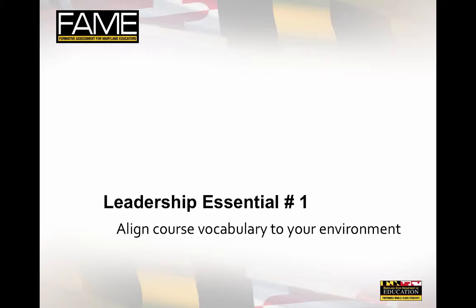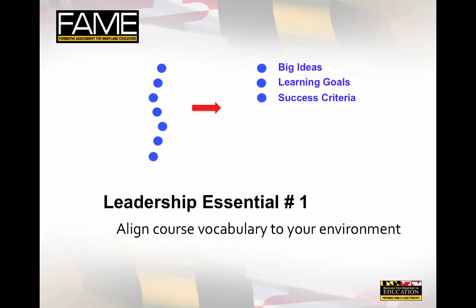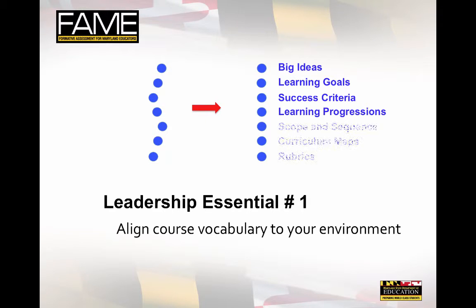Leadership essential number one: align Module 2 vocabulary with school vocabulary. Leaders can help by identifying how the key terms in Module 2 are similar to or different from current terms in use in your school. The terms Big Ideas and Learning Goals have very specific FAME definitions, and we have seen that these are defined in many different ways in the field. Leaders can encourage dialogue about how each of these terms is currently being used and clarify issues that arise. Vocabulary alignment will also help clarify the differences between learning progressions and other types of planning tools, such as scope and sequence documents, curriculum maps, and rubrics. Confusion about these terms is typical, so addressing them early will help teachers more effectively align internal resources with FAME course expectations.